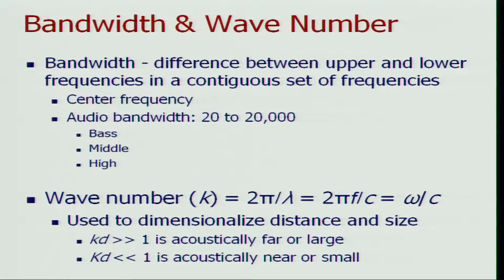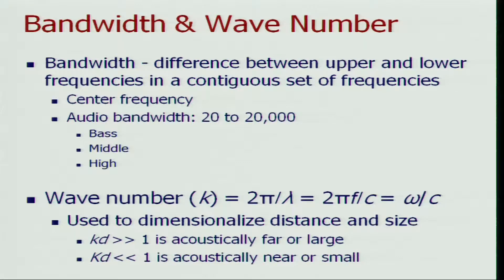Another term we will come across frequently is wave number, which is nothing but 2π over λ, where λ is the wavelength of the sound wave. Since λ equals C over F — where C is the velocity of sound and F is the frequency — wave number is 2πF over C, or equivalently ω (angular frequency) divided by the velocity of sound.